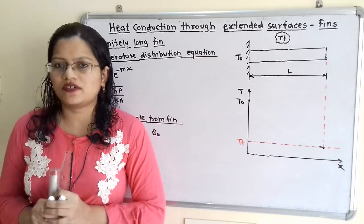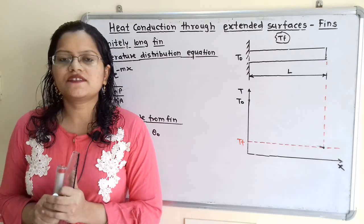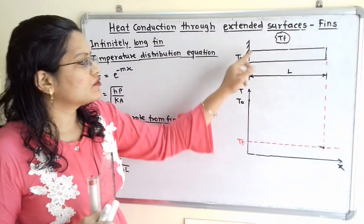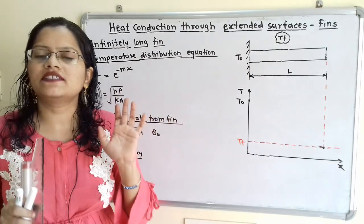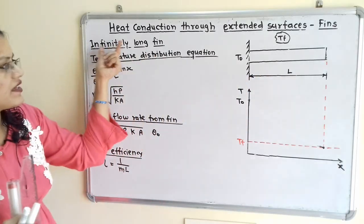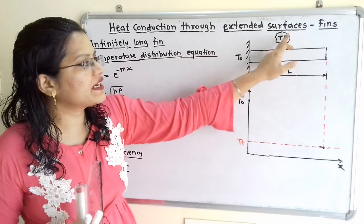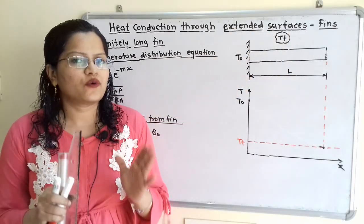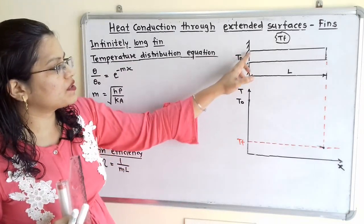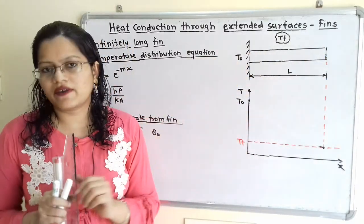Let us understand some important formulas for heat conduction through extended surfaces, i.e. fins, for the condition of an infinitely long fin. We will observe this diagram. This is the extended surface known as a fin, which has length L, and we are going to consider this length as infinitely long. The temperature at the base of the fin is T_O and the surrounding temperature is T_F. Heat transfer is taking place from the base along the length of the fin by conduction and convection.